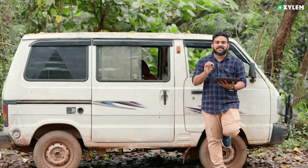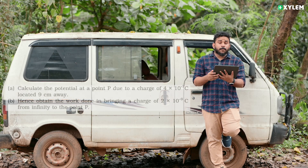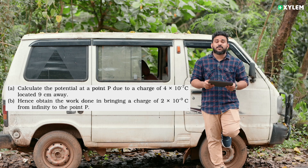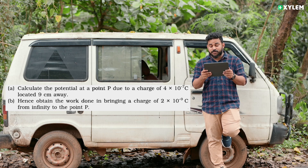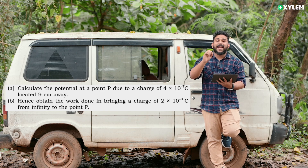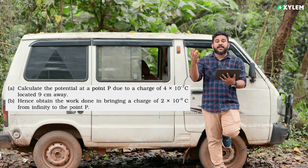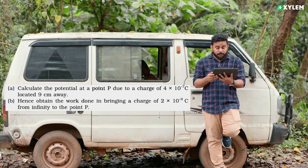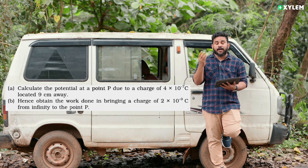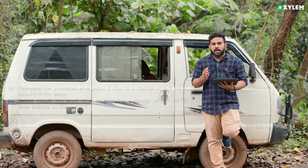Hi! This is going to be a question: Calculate the potential at a point P due to a charge of 4×10⁻⁷ Coulomb located 9 cm away. Hence, obtain the work done in bringing a charge of 2×10⁻⁹ Coulomb from infinity to that point P.